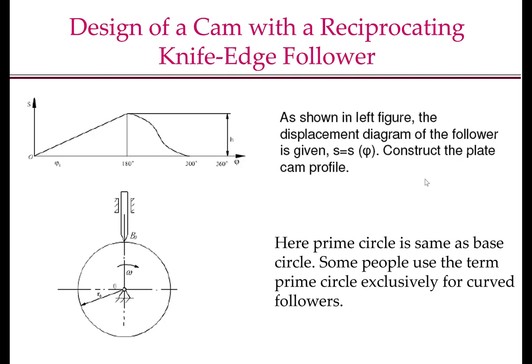Let us now look at a few examples to see how the principle of kinematic inversion is applied. We will start with the design of cam profile for a reciprocating knife-edge follower. The figure on the top left shows an example displacement curve. We will use phi to denote the camshaft angle rotation. The first step is to choose a prime circle radius. For the knife-edge follower, the prime circle is the same as the base circle. Here we will be using prime circle and base circle interchangeably for knife-edge follower and flat-faced follower, and for roller follower, we will distinguish between prime circle and base circle. We are assuming here that the cam is rotating in the clockwise direction.